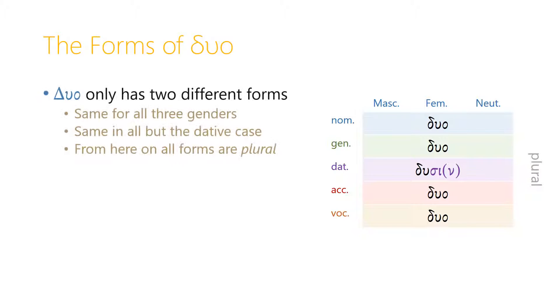With duo, on the other hand, and all the rest of the numbers, all the forms are plural. And duo only actually has two different forms. The forms are the same for all three genders, and the same in all but the dative case. And the dative plural, again, which we'll learn more about in the next badge set, is dusi, or dusin, but the rest of the forms are just duo.